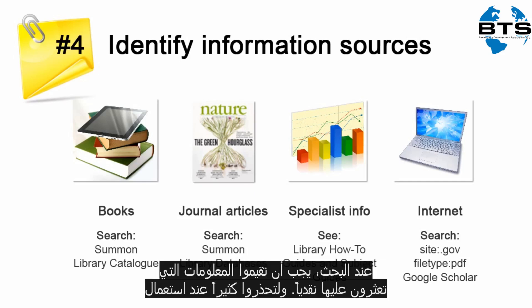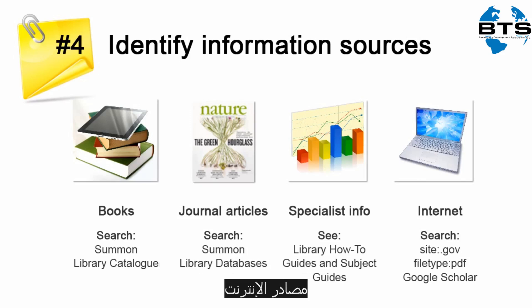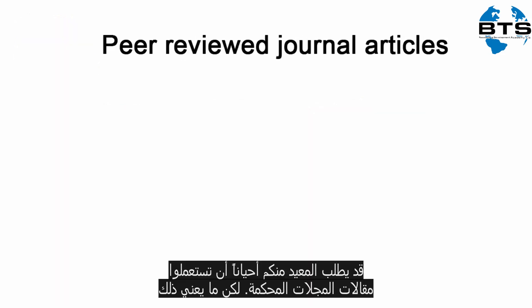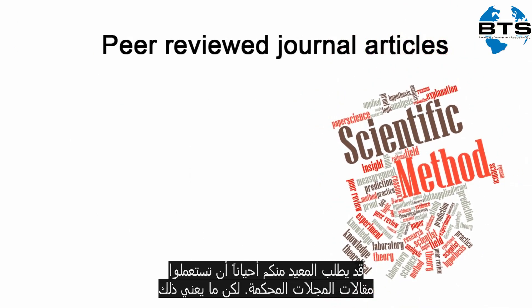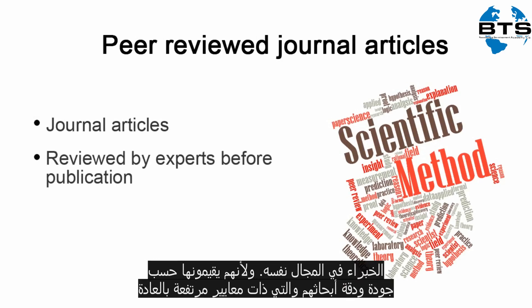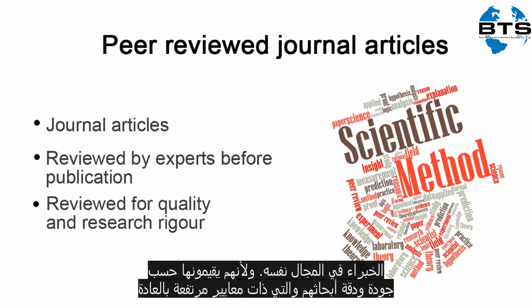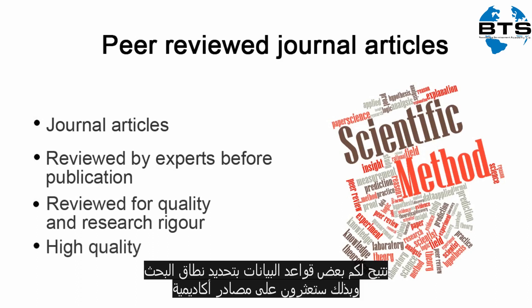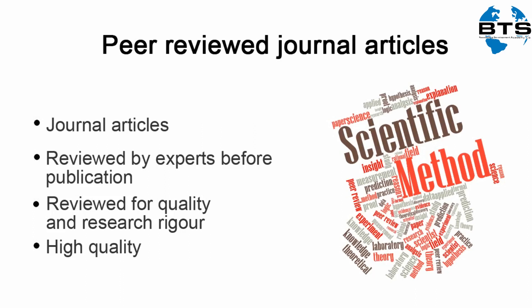When you research, you must critically evaluate the information you find. Be extra careful when using internet sources. Sometimes your lecturer will request that you use peer-reviewed journal articles. Peer-reviewed articles are scholarly journal articles that have been subjected to a review process before being published by experts in the same discipline. Because they are assessed for quality and the rigour of their research, they are usually of a high standard. Some databases will allow you to limit your search so that you find scholarly resources such as these only.